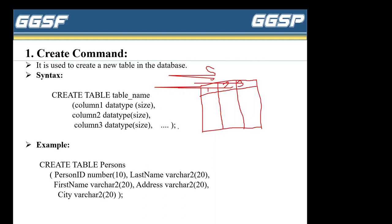For example, if I want to create a persons table — CREATE TABLE, then the table name, which is 'person'. CREATE and TABLE are keywords that stay the same; only the table name changes depending on what you want to create. The first column name is person ID. You know that IDs are numeric, so if you haven't watched the previous video on data types, please go and watch it.